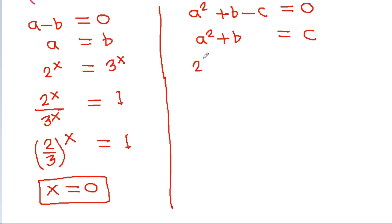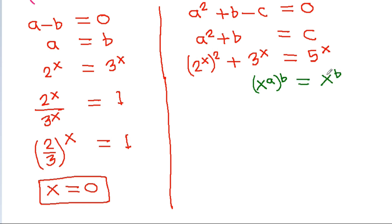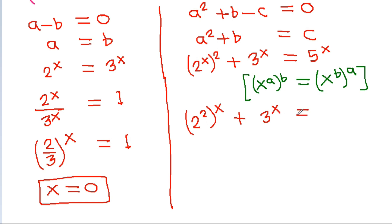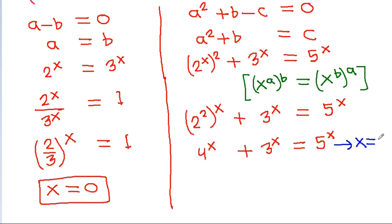For the other factor: a^2 plus b equals c, where a is 2^x, b is 3^x, and c is 5^x. Using x^(a^b) equals x^(b^a), this becomes 2^(2^x) plus 3^x equals 5^x, which simplifies to 4^x plus 3^x equals 5^x. From here we can say x equals 2.